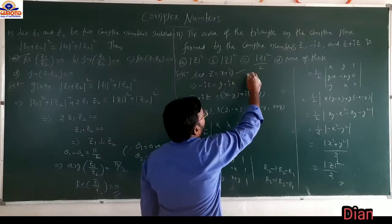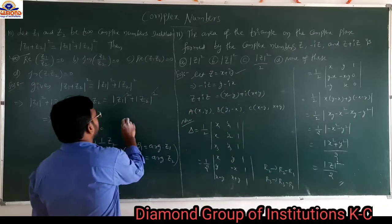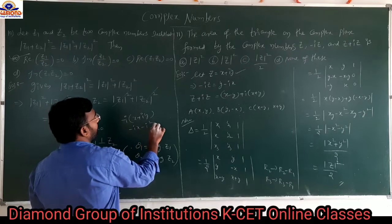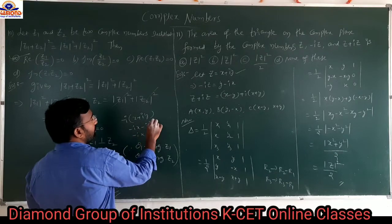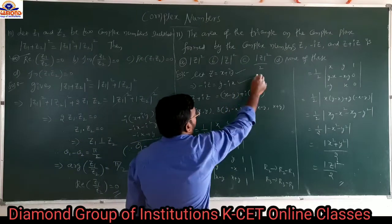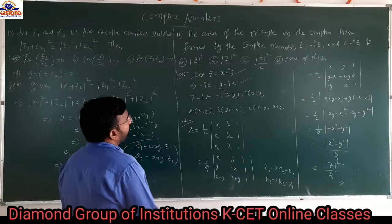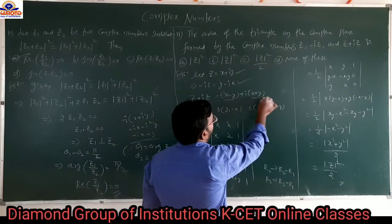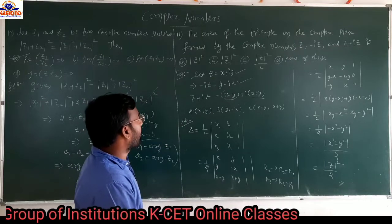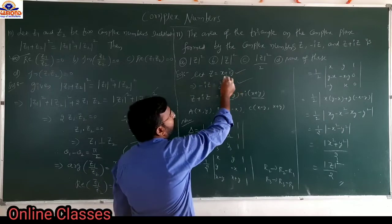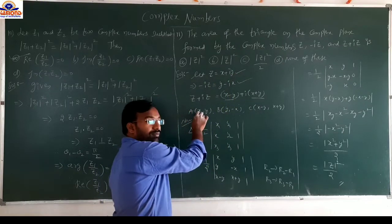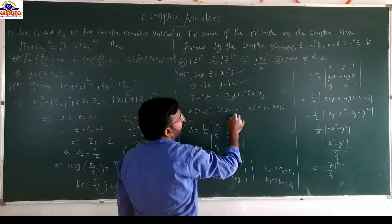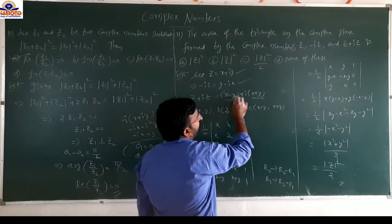Take z equals x+iy. Then minus iz equals minus i(x+iy) equals minus ix minus i²y equals y minus ix. And z plus iz equals x+iy+i(x+iy) equals x minus y plus i(x+y). So the three vertices in point form are: (x, y), (y, −x), and (x−y, x+y).